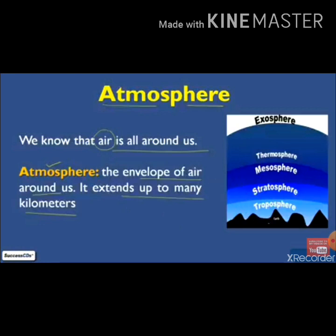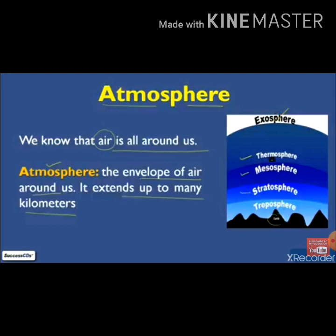Here you can see that on the downside it is the earth. The upside part of the earth is the troposphere. After the troposphere, the next layer of the atmosphere is the stratosphere. After the stratosphere, the next layer is the mesosphere. Then the thermosphere — which is a very hot part. And the last layer of the atmosphere is the exosphere.